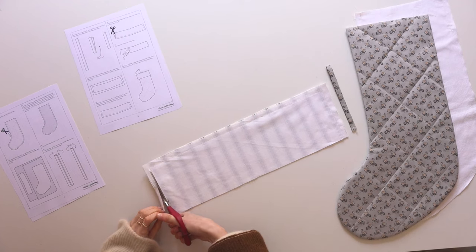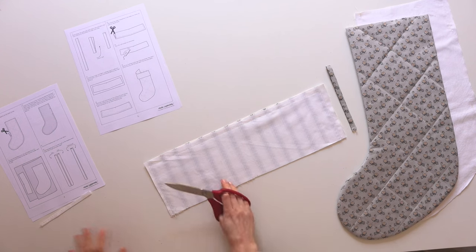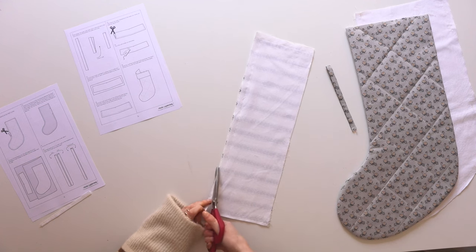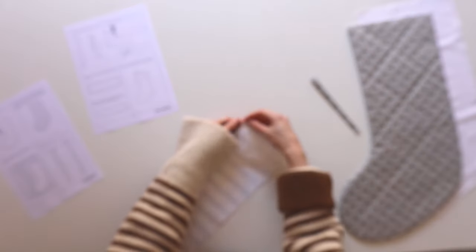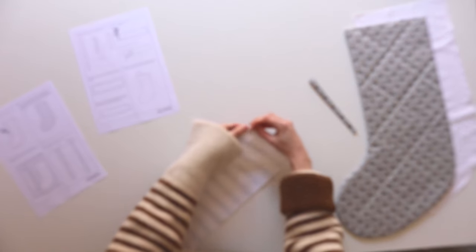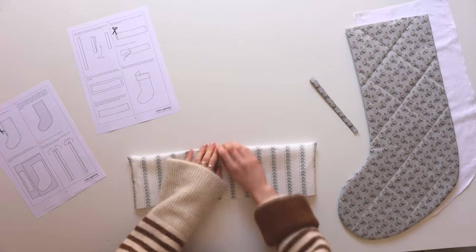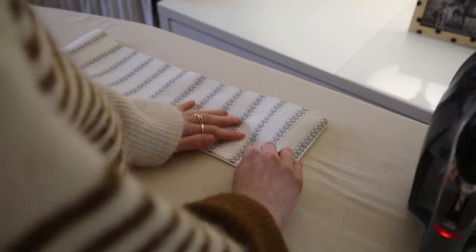You'll now need to trim the sides and the corners so that when we turn it through there's not too much bulk in the corners and you get a nice crisp edge. Spend a bit of time finding the edges of your cuff once you've turned it back the right way around and then once you've found the edges give it a good press so that it stays in place.